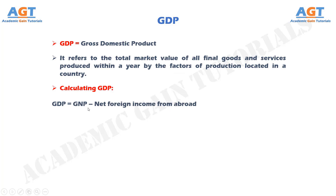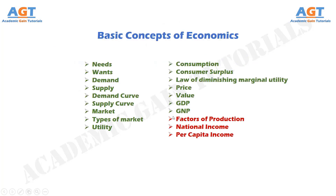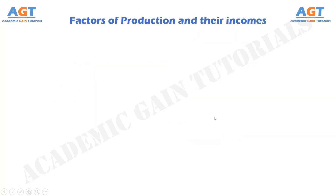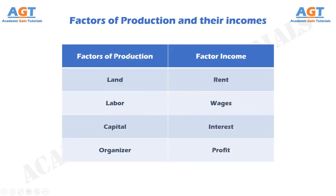So, we have completed these topics, and there are three more topics left. Let's look into factors of production and their incomes. We can demonstrate factors of production and their incomes as in the following table.